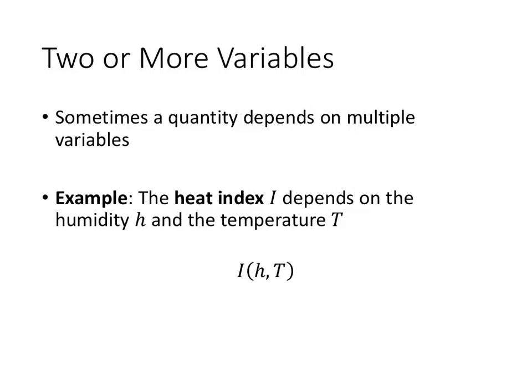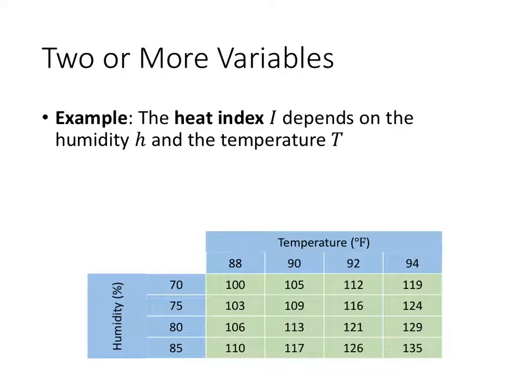Here's another example, where we have the heat index, which depends on humidity and temperature. This time, instead of getting a formula, we're given a table of values. Since there are two input variables, we need to have a value of our function—those are the values here in green. We need to have one of those values for every pair of values of humidity and temperature.